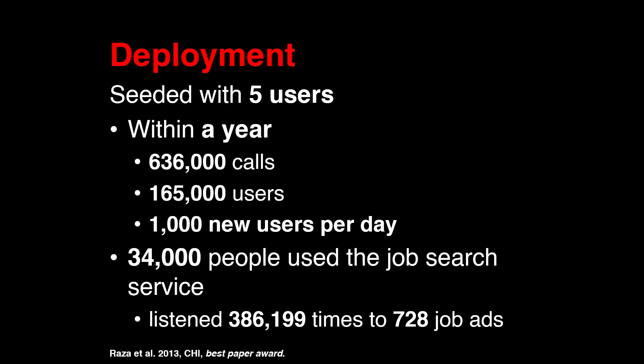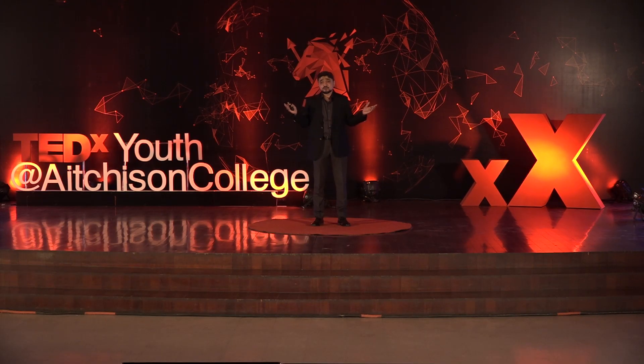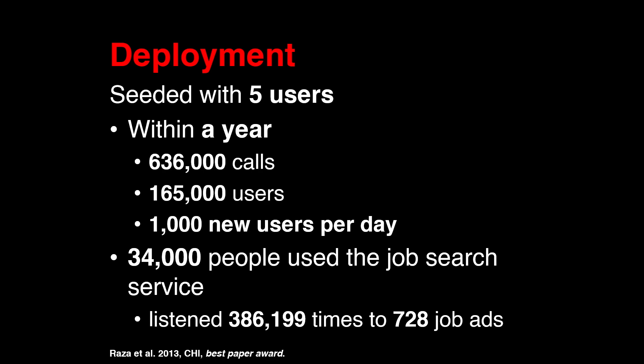We recorded those ads and made them available through Polly for audio browsing. We seeded the service by giving the phone number to five low-literate office boys at LUMS. We did not give them any demo or explanation — we just said, here is a phone number, call it, see what happens. Four out of five called. Within a year and without any further advertisement, Polly had received 636,000 phone calls in which 165,000 users participated. At its peak, Polly was spreading to 1,000 new people every day, and we had to severely throttle usage because we simply could not sustain the airtime funds. 34,000 of these people also started using the job ad service and listened 386,000 times to the 728 ads available in the system.